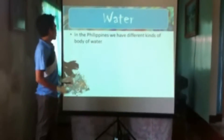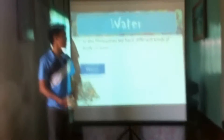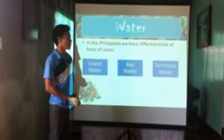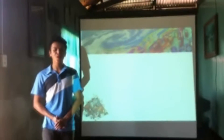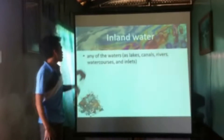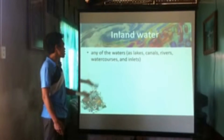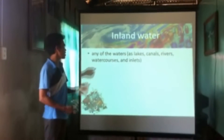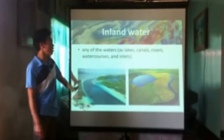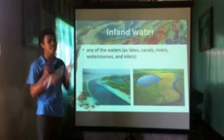Next, water in the Philippines — we have different kinds of bodies of water: inland water, bay water, and territorial water. First, we will discuss inland water. Inland water refers to any waters such as lakes, canals, rivers, water resources, and inland bodies. As we can see in this picture, this kind of body of water is within the state, so we call it inland water.